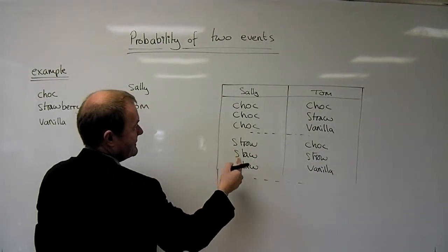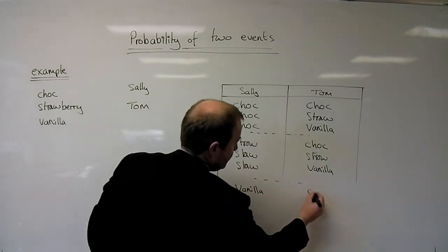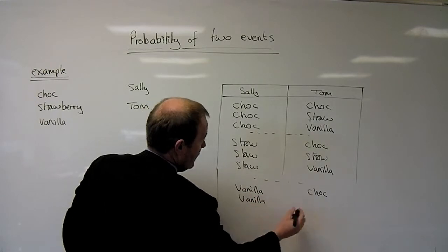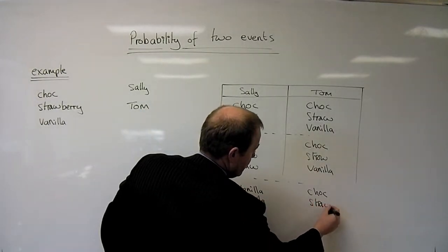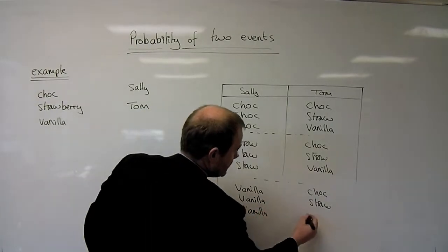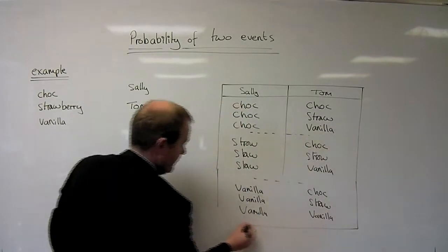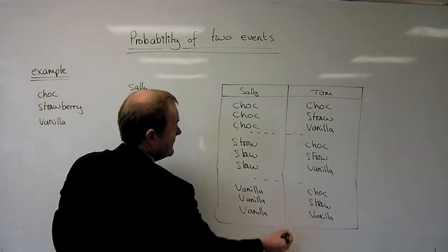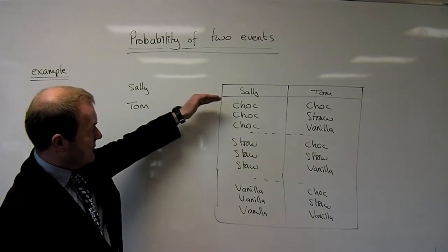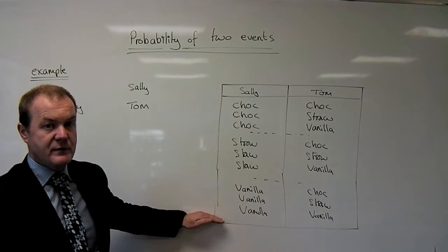Finally, Sally might choose vanilla. Again, I'm going to cycle Tom through the three options he might choose. So I know I've identified all the possible outcomes that could take place when Sally and Tom choose ice cream. Counting them up: one, two, three, four, five, six, seven, eight, nine possible outcomes.